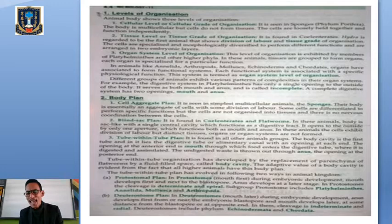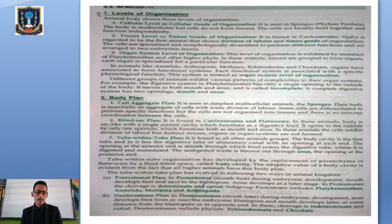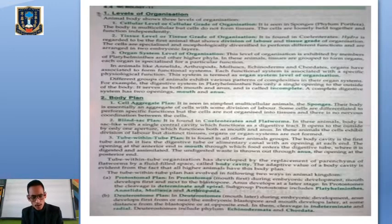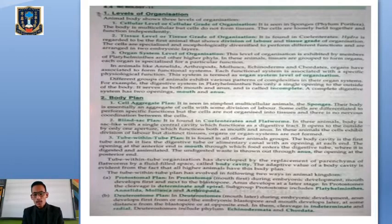The second basis is body plan. We have the cell aggregate plan seen in sponges, the blind sac plan seen in Coelenterates and flatworms, and the tube-within-a-tube plan seen in members of other higher phyla. Though body plan has been removed from the syllabus, it is basic knowledge because once we understand these terms and terminologies, it becomes easier to go through the characteristics of each phylum.